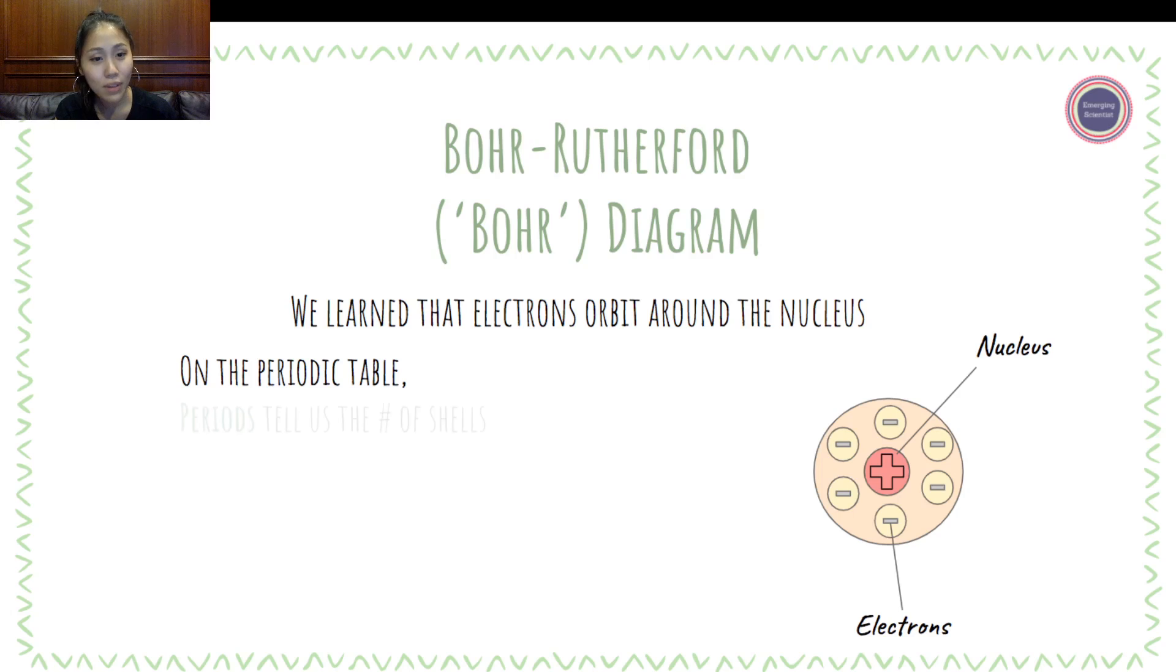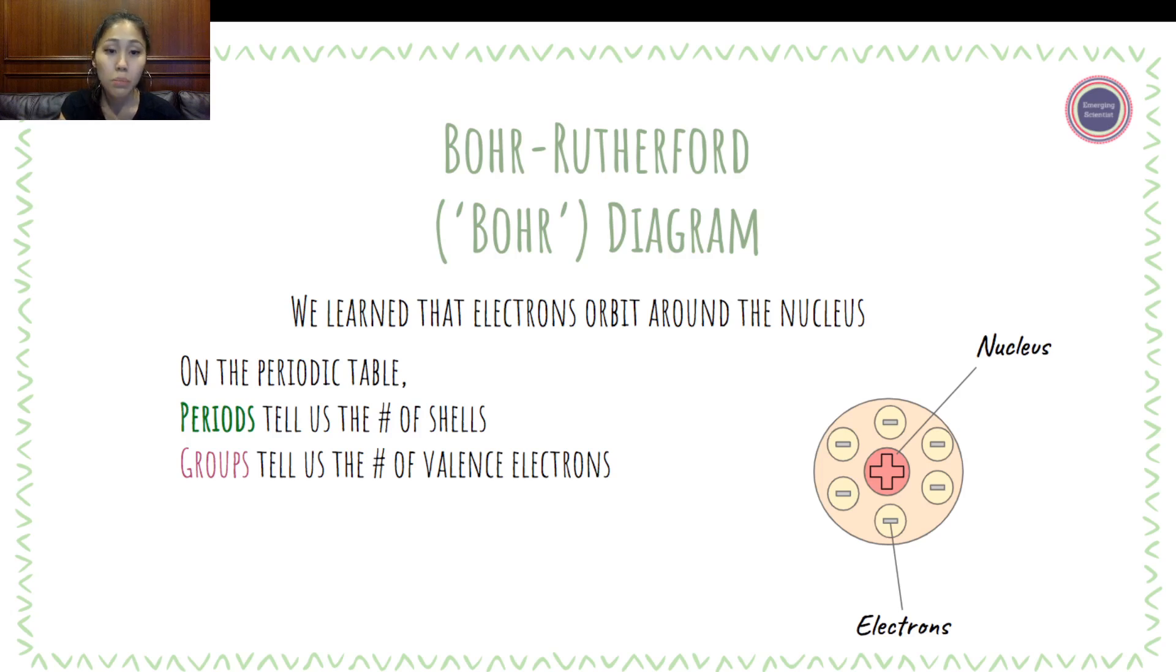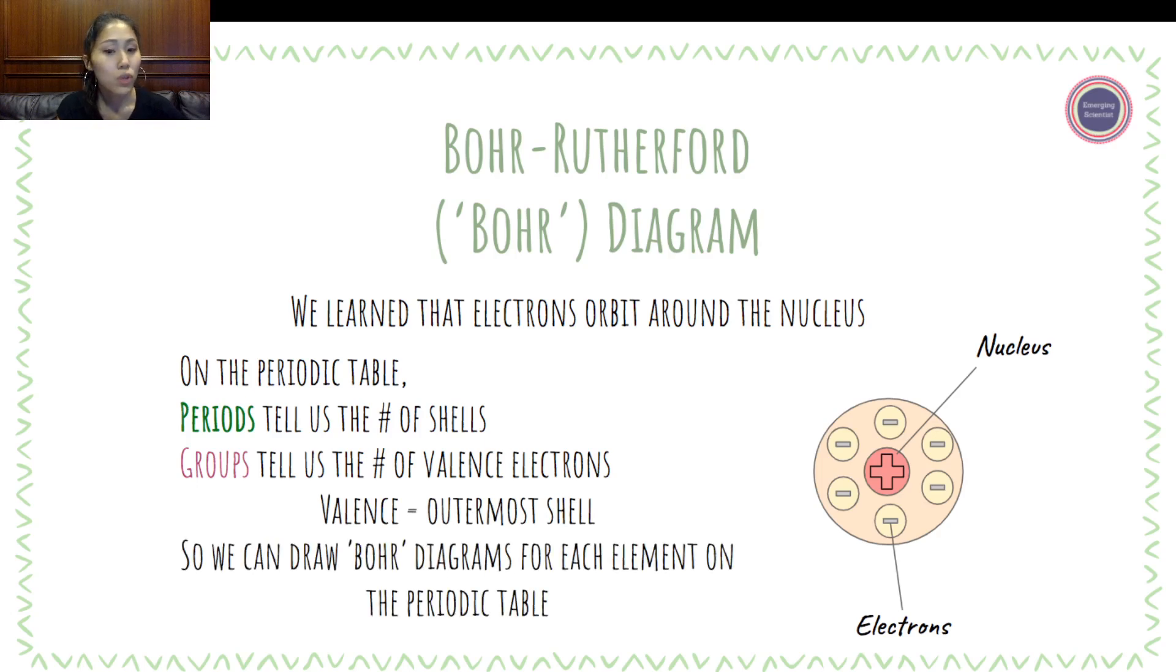In the Bohr-Rutherford diagram, we learned that electrons orbit around the nucleus. On the periodic table, there are two pieces that you need to know. The first piece is that periods tell us the number of shells. Groups tell us the number of valence electrons. The number of shells means the number of electron shells that orbit around the nucleus. You must be thinking, what is valence? Valence is the outermost shell. So we can draw Bohr diagrams for each element on the periodic table by knowing what period and what group that element is found.